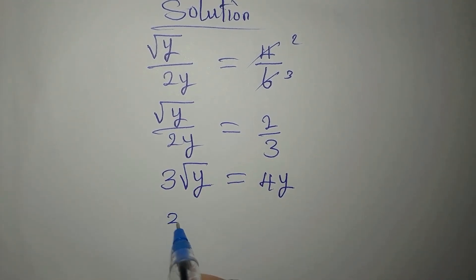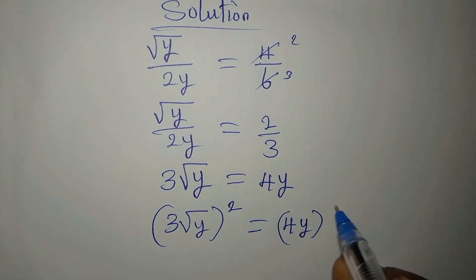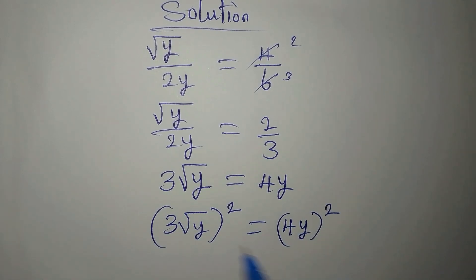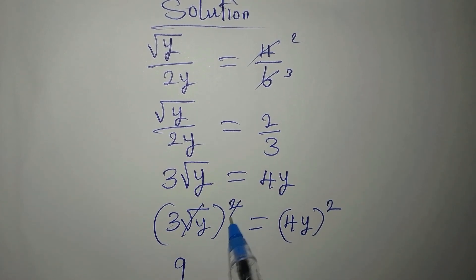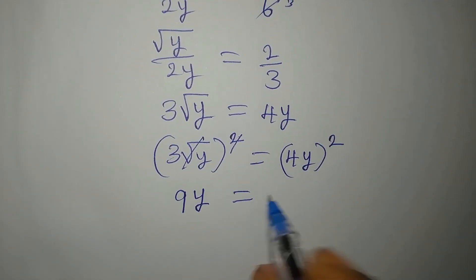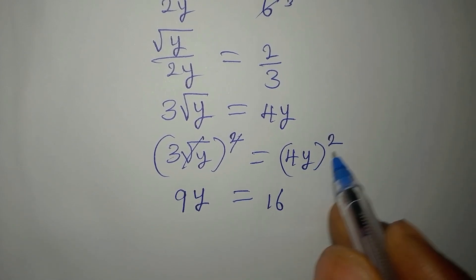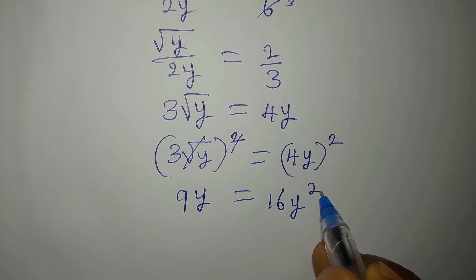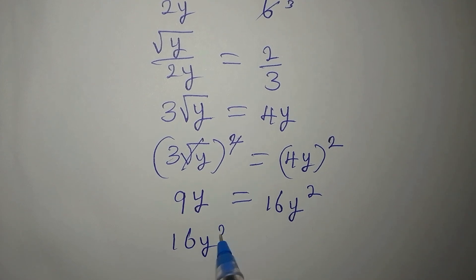From here we can square both sides of the equation, so we have (3 square root of y) squared equals (4y) squared. 3 takes the power giving us 9, and the square root cancels, so on the left we have 9y.